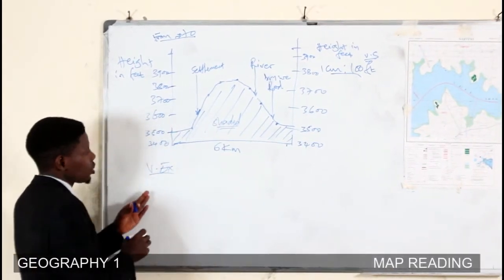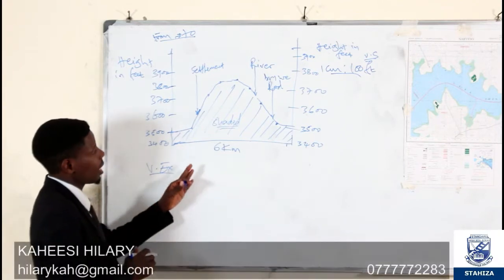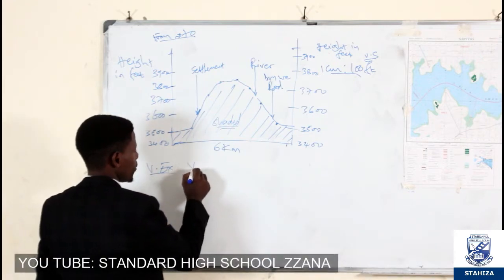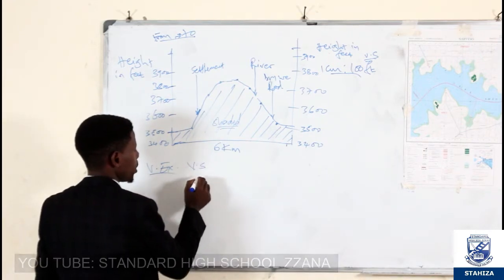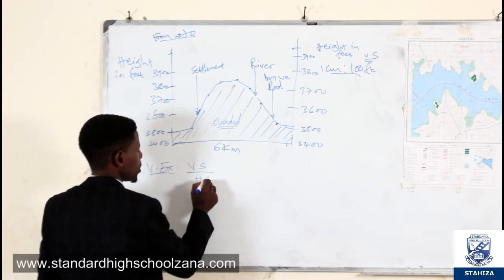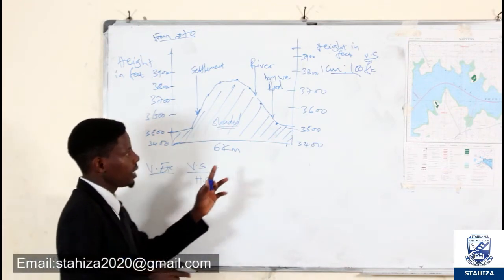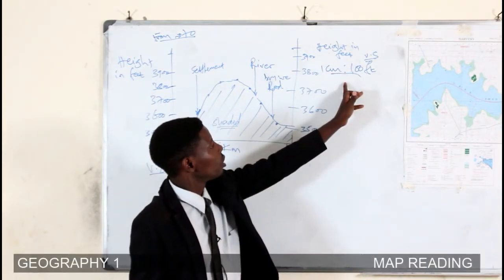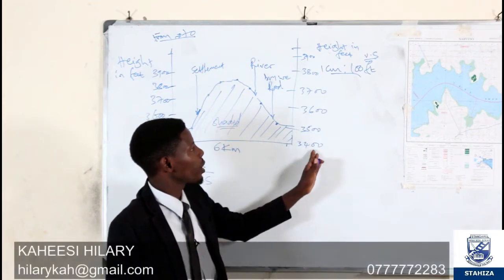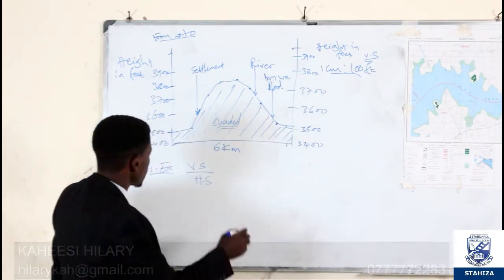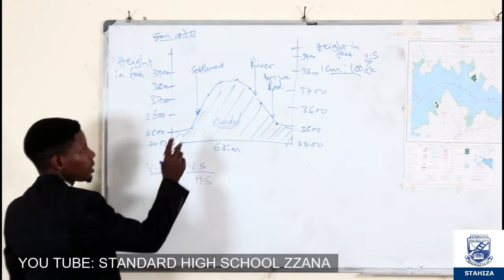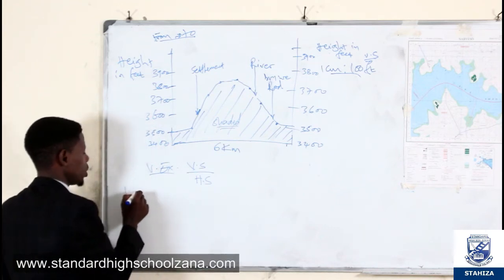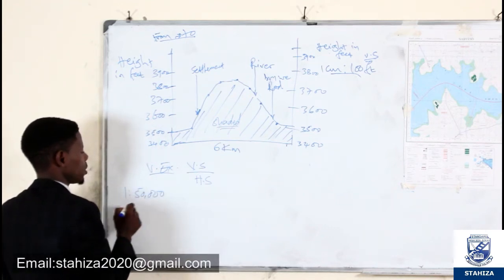Vertical exaggeration, especially asked after drawing the cross section, has the formula: vertical scale divided by horizontal scale. The vertical scale is the one we used while drawing the cross section. The horizontal scale is the one in the northwestern part of the map extract, which is 1 to 50,000.